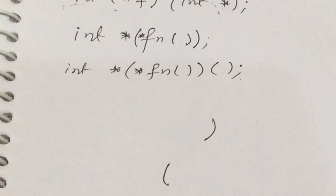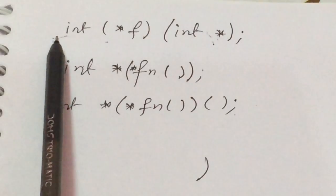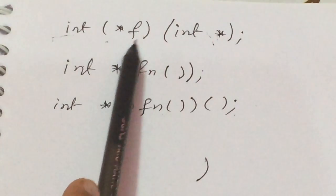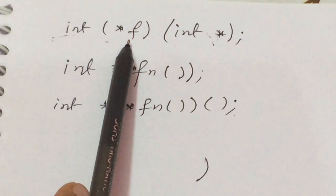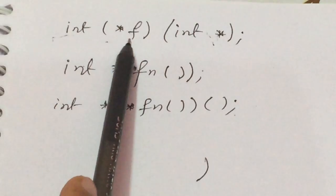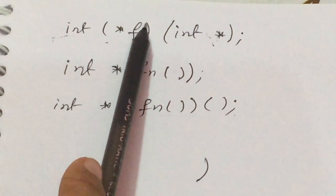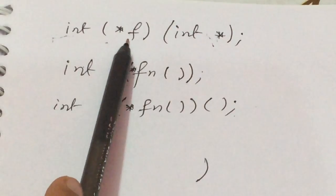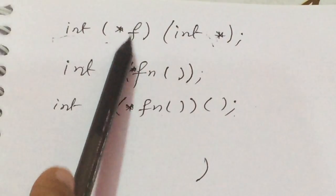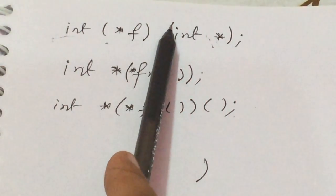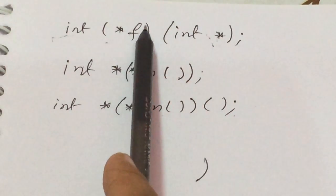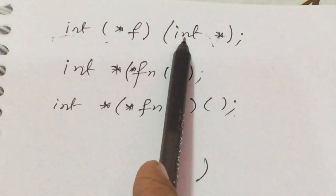Let's take the first example. Here this declaration is given. First we find where the identifier is — we find that 'f' is the identifier. So we say 'f is'. Then we move to the right side of f, but since the parenthesis is closed, there is nothing there, so we move to the left of f and get the asterisk — 'pointer to'. So we say 'f is pointer to'. Moving to the right, we find the function parenthesis, so f is pointer to a function which takes one pointer to an integer as an argument.